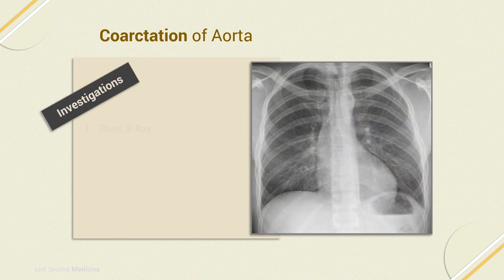Investigations for this condition include chest X-ray, which may show rib notching. This occurs because blood diverts down intercostal arteries to reach the lower body, causing these vessels to dilate and erode the local rib bone.